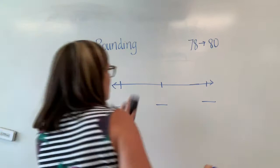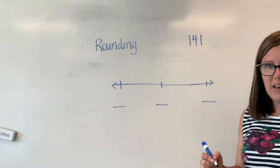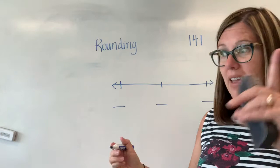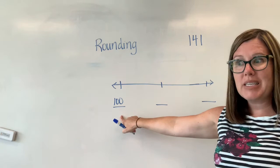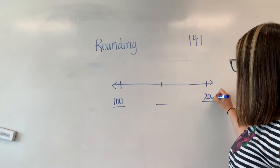This time I want to round 141 and I want to round it to the nearest hundred. Well I hear 141. I hear a hundred. So that's the number I'm going to put on my left. Then if I was counting my hundreds what would the next hundred be? 200.